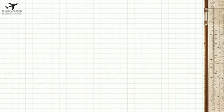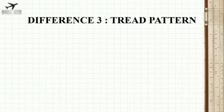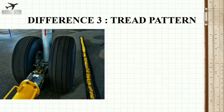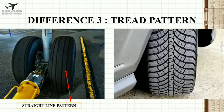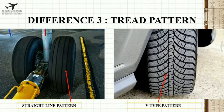Difference 3: Tread pattern. You can see the tread pattern of aircraft and car tires. For aircraft tires, designers use a straight line pattern to avoid water buildup under the tire and also for smooth taxiing of the aircraft. For car tires, designers use a V-type pattern, mainly to prevent hydroplaning. These are the major differences between tires used in aircraft and cars.